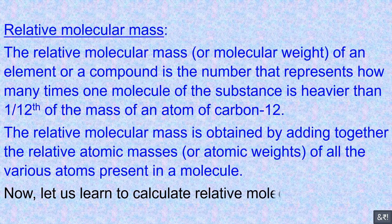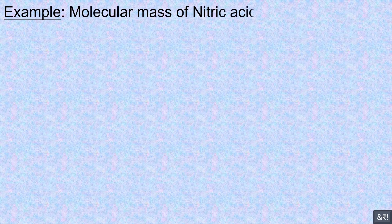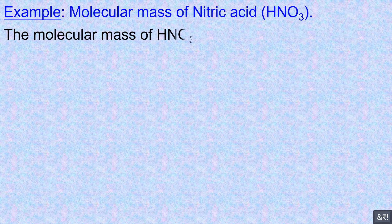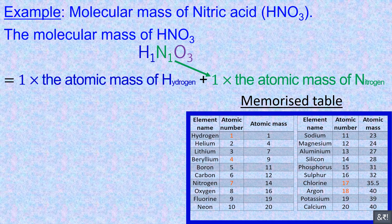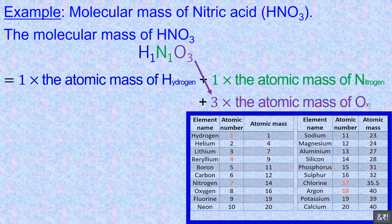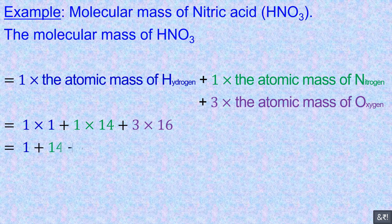Let us learn to calculate relative molecular mass. Example: molecular mass of nitric acid, HNO₃. The molecular mass of HNO₃ equals one times the atomic mass of hydrogen, plus one times the atomic mass of nitrogen, plus three times the atomic mass of oxygen. Equals 1×1 + 1×14 + 3×16, equals 1 + 14 + 48, equals 63 U.